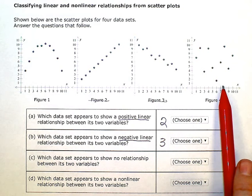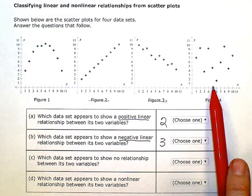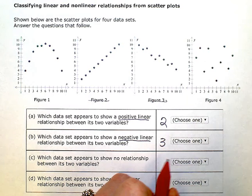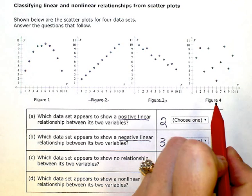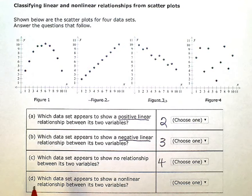The dots are really, truly just scattered on the page. So this would be figure four. There's no discernible relationship. Which data set appears to show a nonlinear relationship?